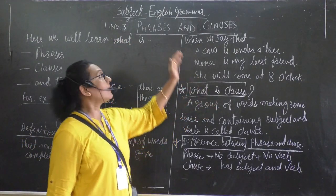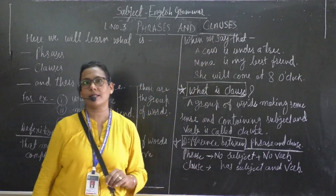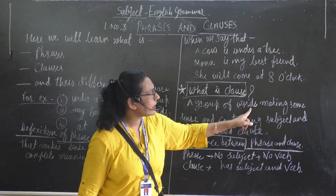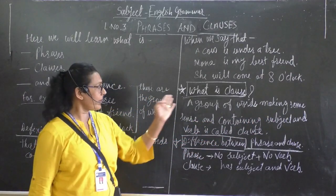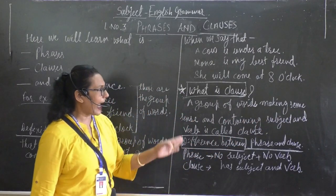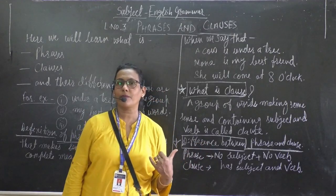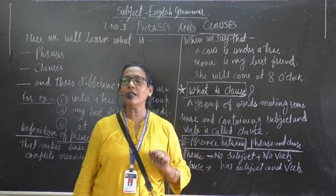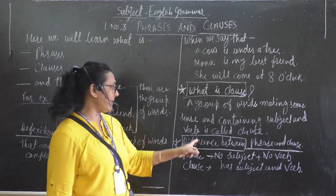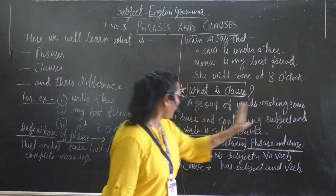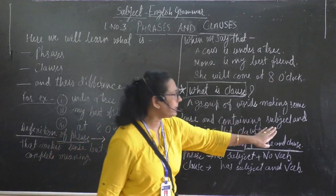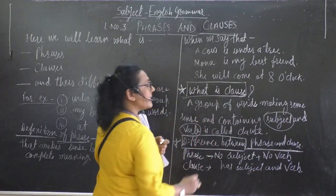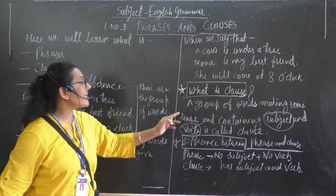And then we come to the second part, that is clauses. What is a clause? A group of words making a sentence. Pay attention — a group of words making some sentence, and containing a subject and a verb. Subject also, and verb also. That is called a clause.